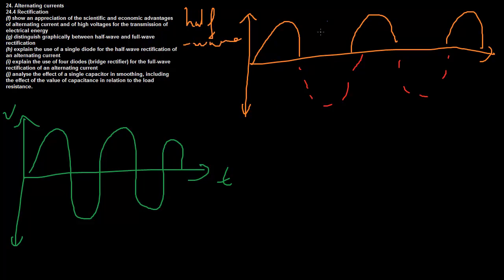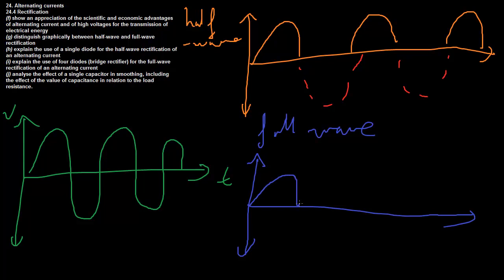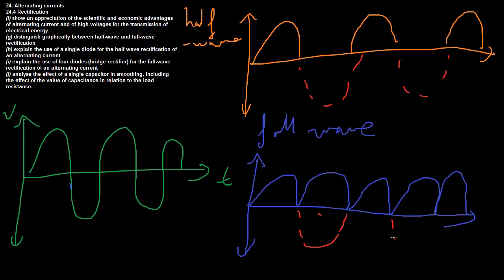Full wave rectification looks like this - basically a whole lot of camel humps. This is the one we prefer and use most of the time. What we've done is taken the electrons and stopped them from going in the negative direction, making them always flow in one direction. We still have the wave nature of the AC curve, but we've taken all the current that was flowing in the bottom direction and forced it to flow upwards instead.